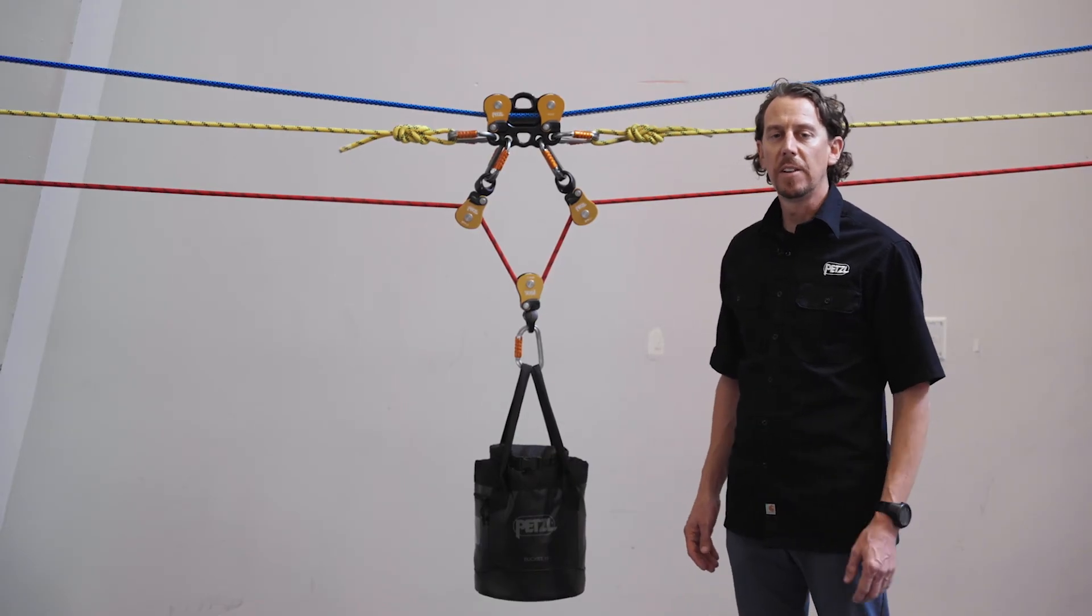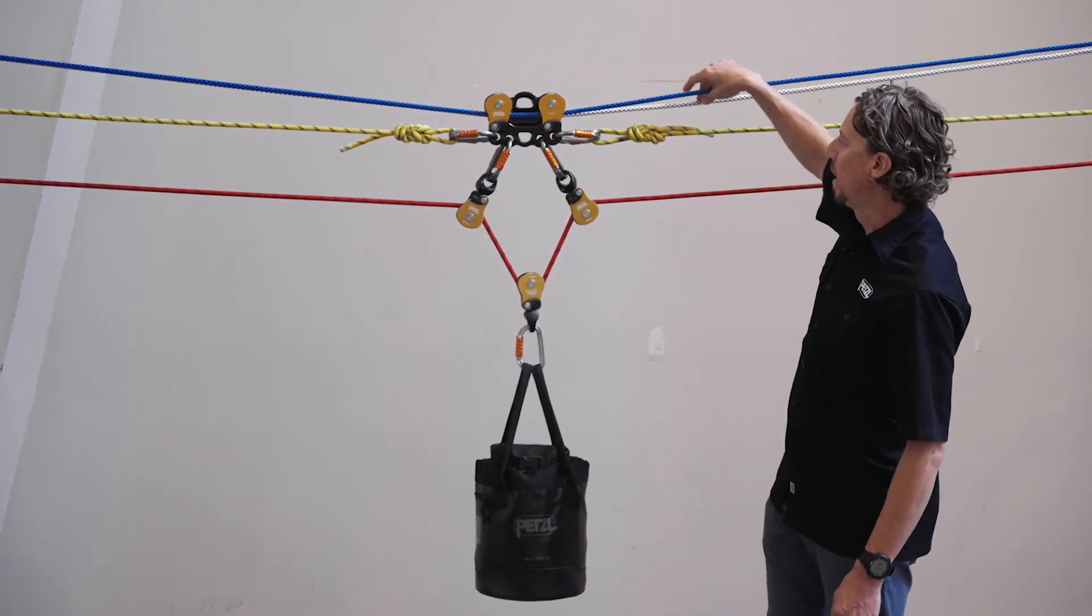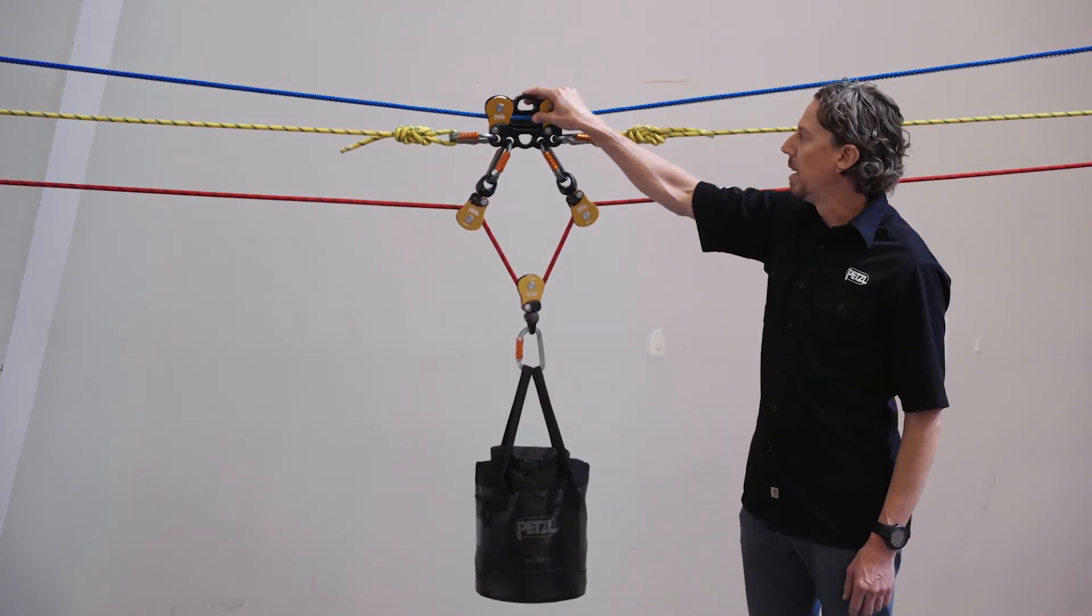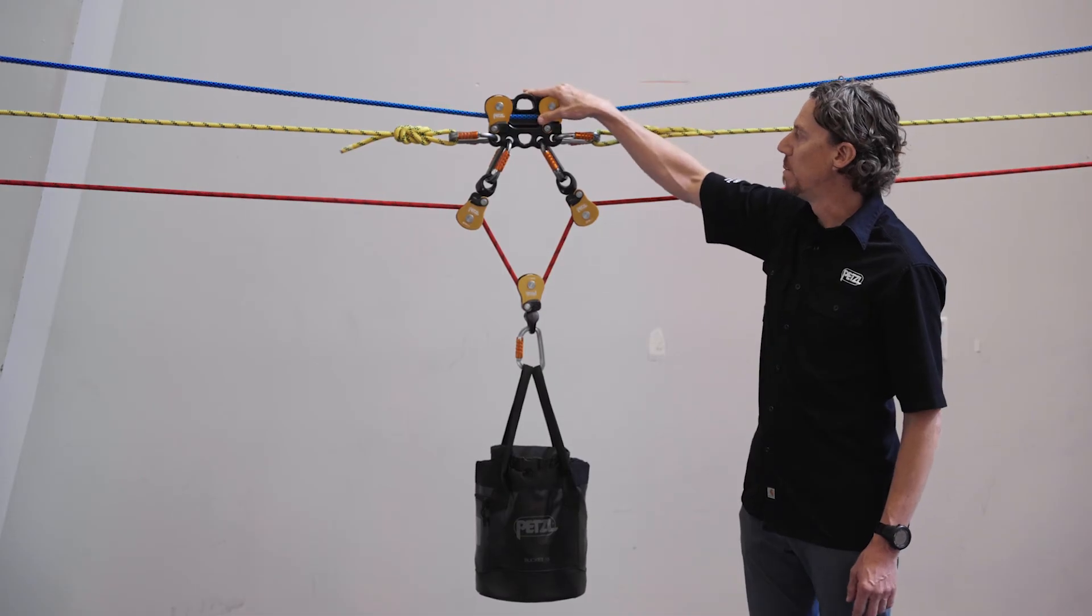All right, so for this final configuration, we have two track lines that are rigged at the same height with a horizontal offset, and I'm using two Reeves back to back.